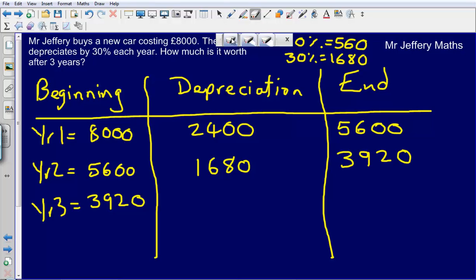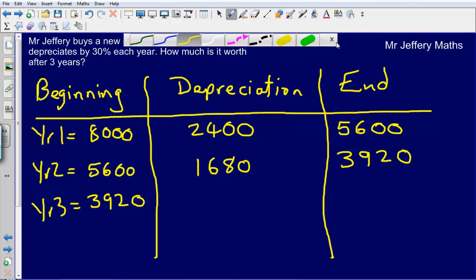Again, it depreciates by 30%. So let's quickly work out what 30% is for this one. So 10% is going to be £392, just dividing 3,920 by 10.